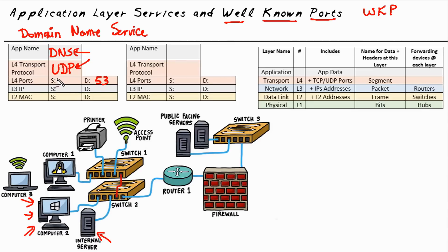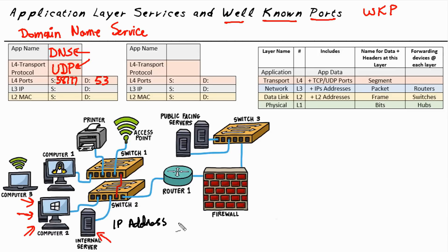Let's say that Bob's computer spun the magic wheel and chose port 58777, which isn't in use, and it'll include that in the request. When the server receives this request, it would be going to the server on port 53 where the DNS server is listening and waiting, and it would also see it as coming from port 58777, which Bob chose when he made the request. Before Bob's computer sends that DNS request, it's going to have to include the IP address of the server. To simplify this, the server is IP address B and Bob's computer is IP address A. Bob will include in the request the destination IP address of the server, and also include its own IP address as the source.